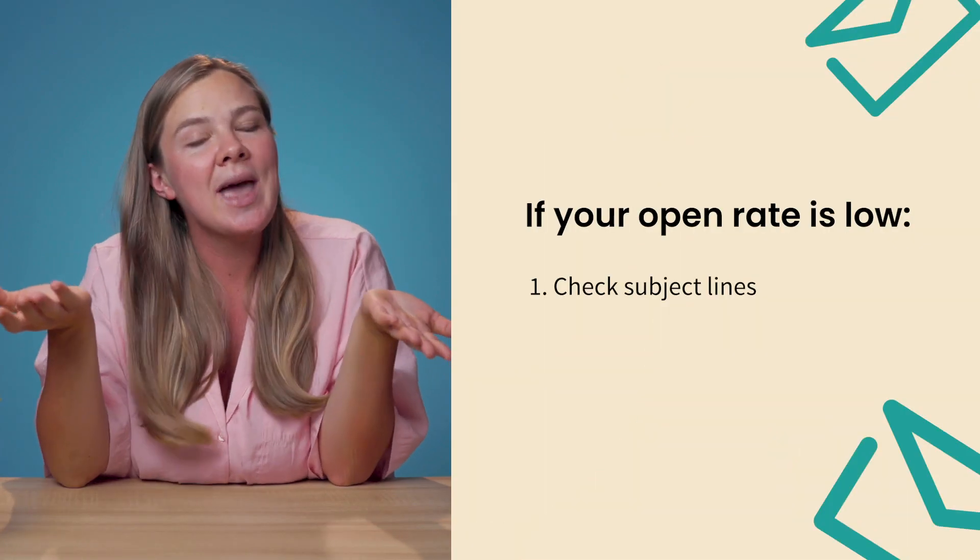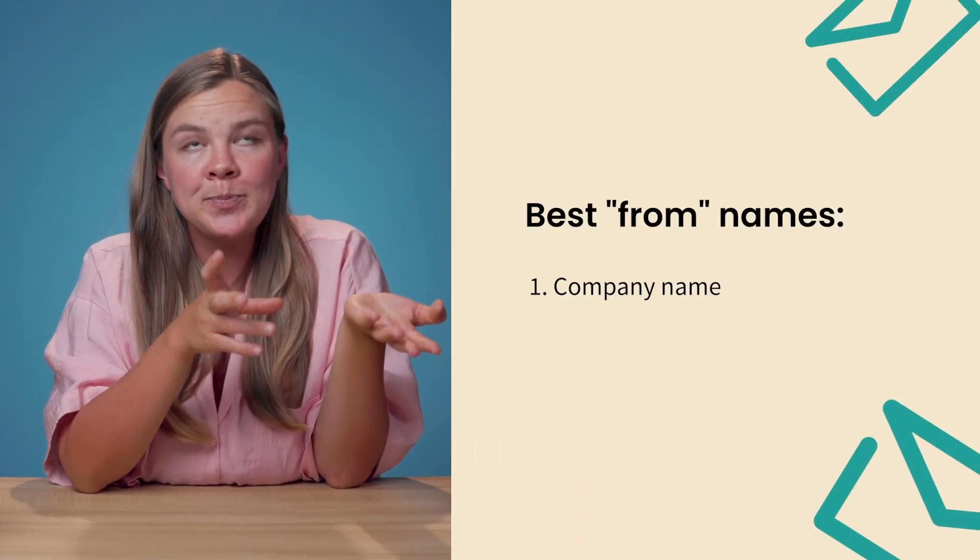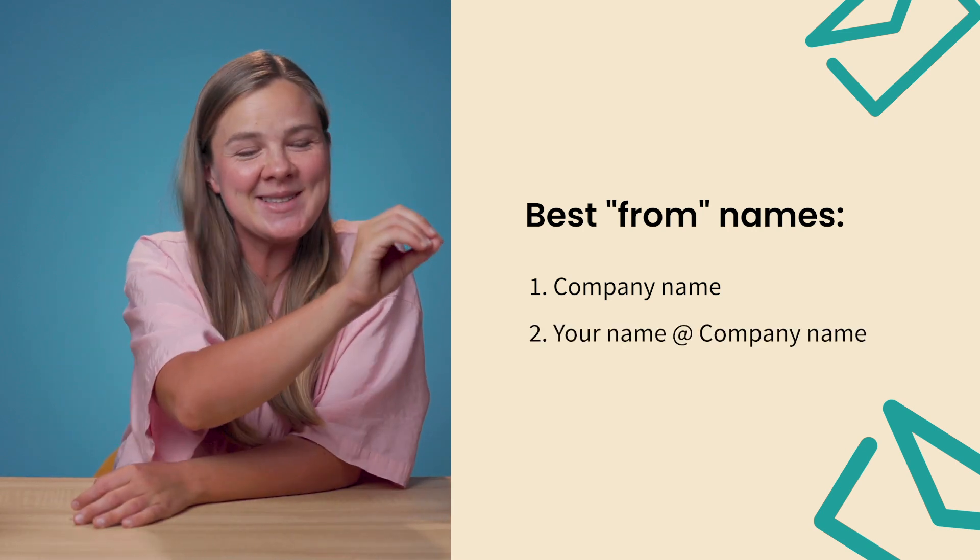Beyond subject lines, if your open rate is low you should also look at your from name. The from name gets overlooked a lot but it's important — it should be either your company name, or if you want to experiment, try a person's name at your company. For example, instead of sending from 'Luck & Co Agency' I would send from 'Casey at Luck & Co Agency' or just 'Casey Luck.' Even if you work at a large company like Microsoft, sending from 'Casey at Microsoft' might actually be the thing that improves your open rate — don't be afraid to experiment, even if you send to millions of people.